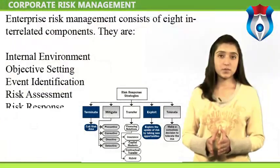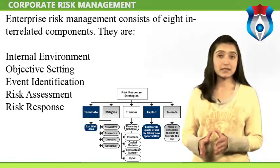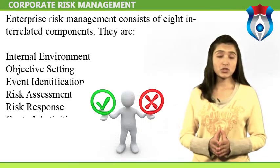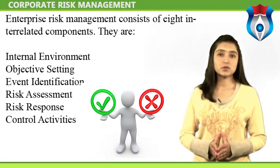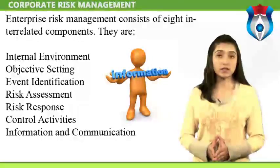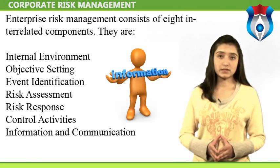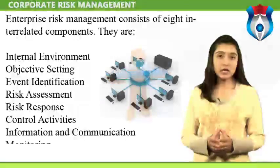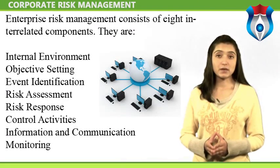Risk response management selects risk responses — avoiding, accepting, reducing, or sharing risk — developing a set of actions to align risks with entities' risk tolerances and risk appetite. Control activities, policies, and procedures are established and implemented to help ensure risk responses are effectively carried out. Relevant information is captured and communicated in a form and timeframe that enables people to carry out their responsibilities, with effective communication flowing down, across, and up the entity. The entirety of enterprise risk management is monitored and modifications made as necessary through ongoing management activities, separate evaluations, or both.